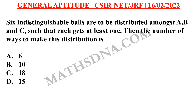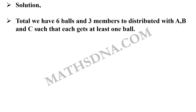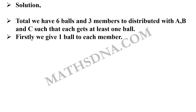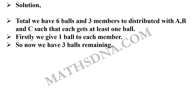Let us solve this question step by step. As per the question, there are total 6 indistinguishable balls and there are total 3 members A, B and C. Also, it is given that each member gets at least one ball. This gives us that everyone will get one single ball and there will be only 3 remaining balls for the other different types of distributions.